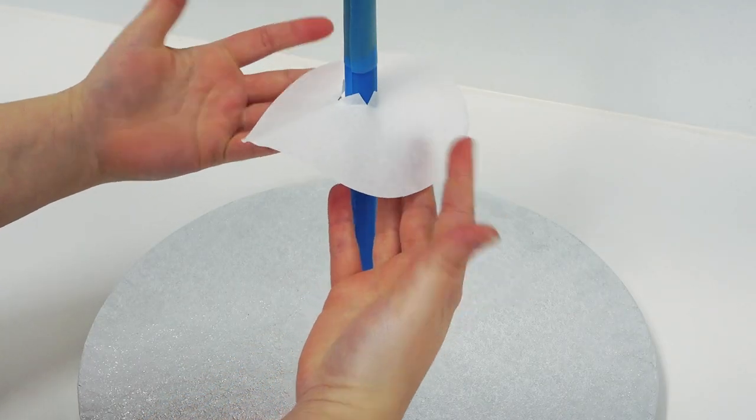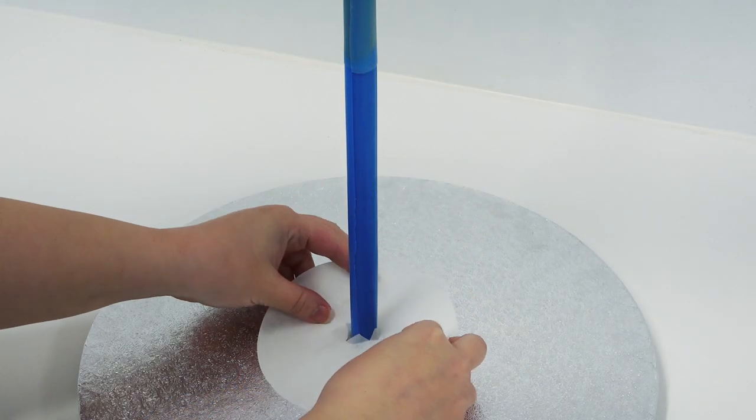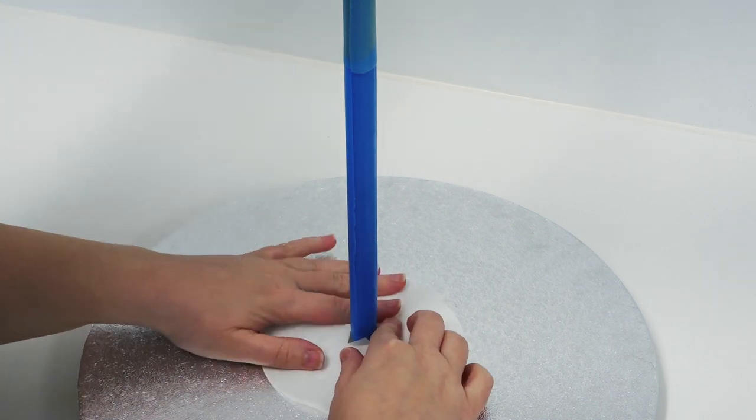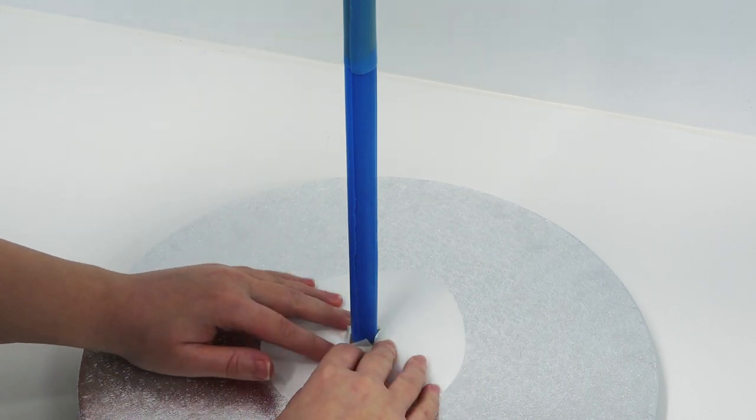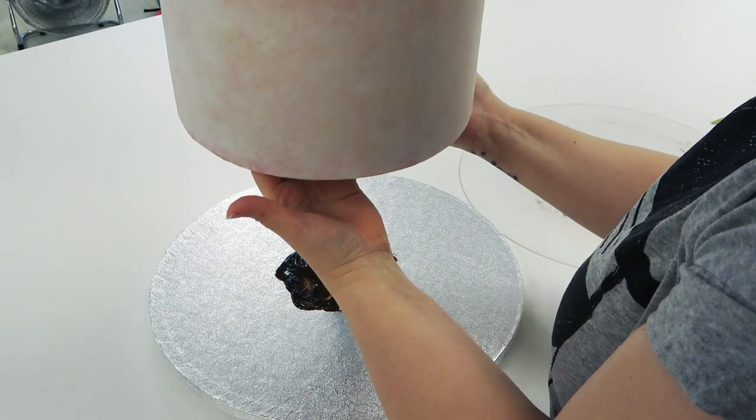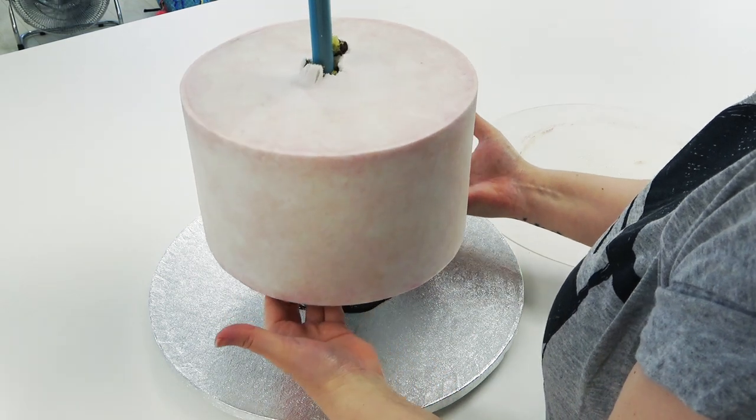Then for your hot glue on the base you can either cover it with greaseproof paper, melted chocolate, or if you've got a baseboard underneath your first tier like I have on my 9 inch you can pop it straight on as the hot glue won't be up high enough to come into contact with your sponge.